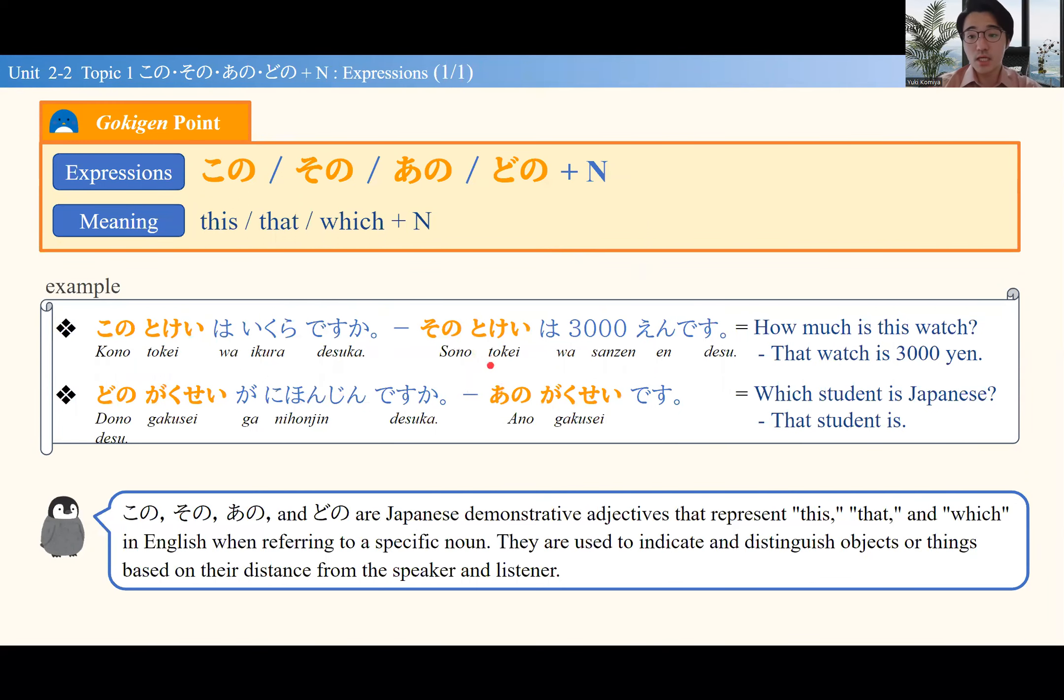その時計—that watch—その時計は3000円です means 'that watch is 3000 yen.' どの will be 'which,' so どの学生 means 'which student.' どの学生が日本人ですか—which student is Japanese?